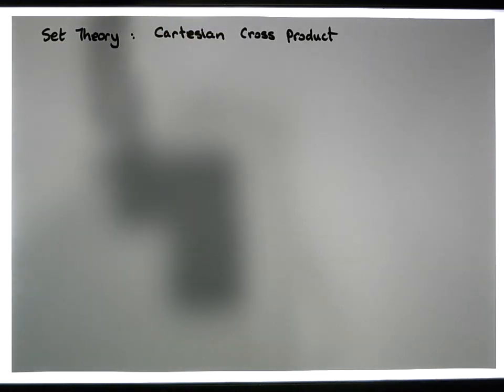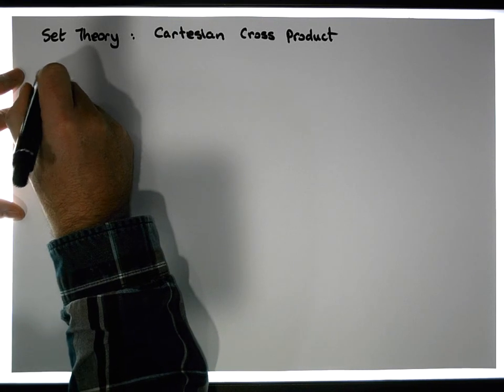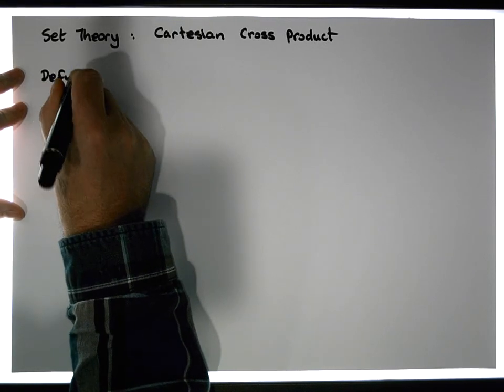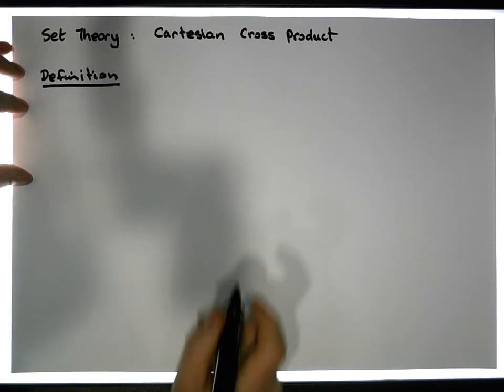So I suppose what we need to do is we need to define what the Cartesian cross product is. So let's just put down a definition and bear with this definition.